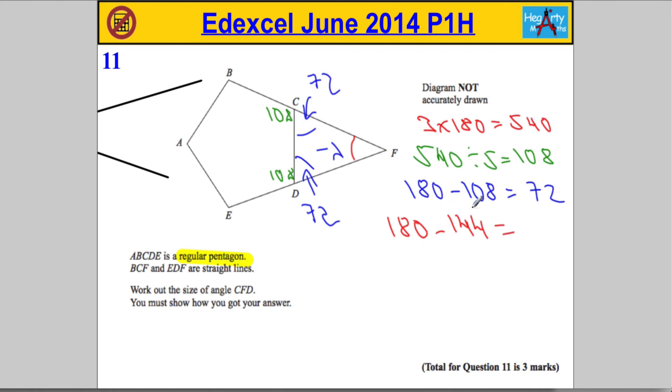And 180 subtract 144. Well, I'm going to count up. So adding on 6 will give me 150. And then 30 will give me 180. So it's got to be 36 degrees.